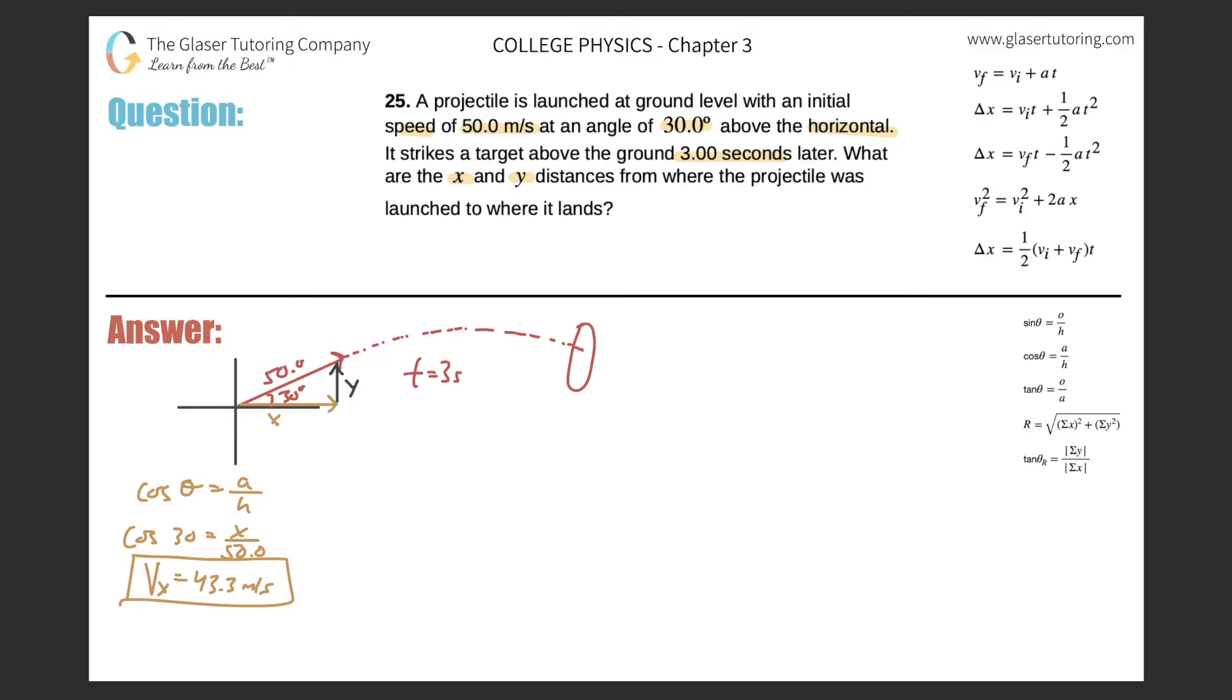Now, let me calculate my y component. So we have a hypotenuse. We know this angle, and we want to solve for the side opposite of that angle. That is sine. So sine of theta is equal to the opposite side over the hypotenuse. So sine of 30 will equal y over 50.0. So just cross multiply. It's going to be vy. So we got sine of 30 times 50. So it comes out to 25. So we got 25 meters per second.